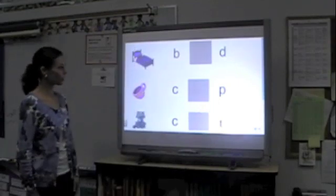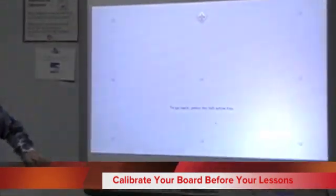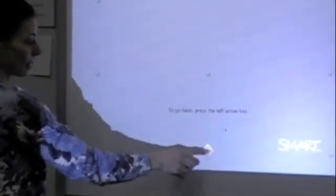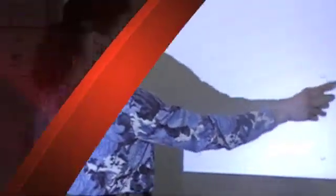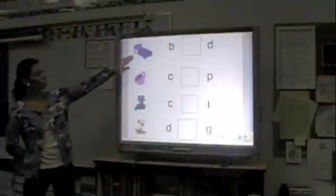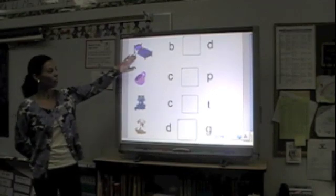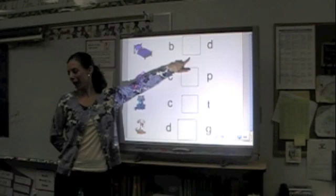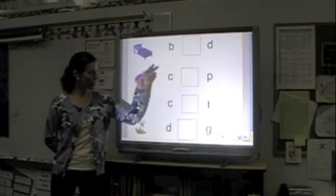We have a picture here. This is a picture of a bed — a bed. We're missing a letter for spelling the word bed: an E. Ryan, come and write in an E for me.